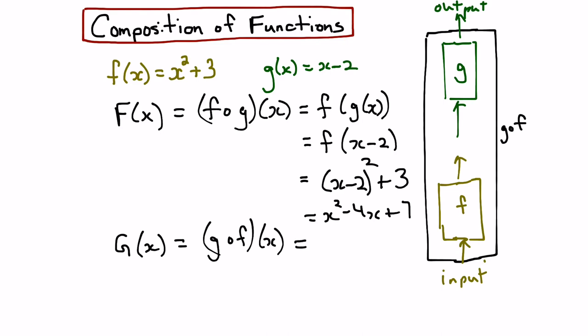Alright, so this would give us g of f of x. We're starting with f of x, and f of x equals x squared plus 3. So that goes in here: g of (x squared plus 3). And that becomes the input for the g function, so it goes in there. And we would end up with x squared plus 3 minus 2. And if we solve that, we get x squared plus 1.